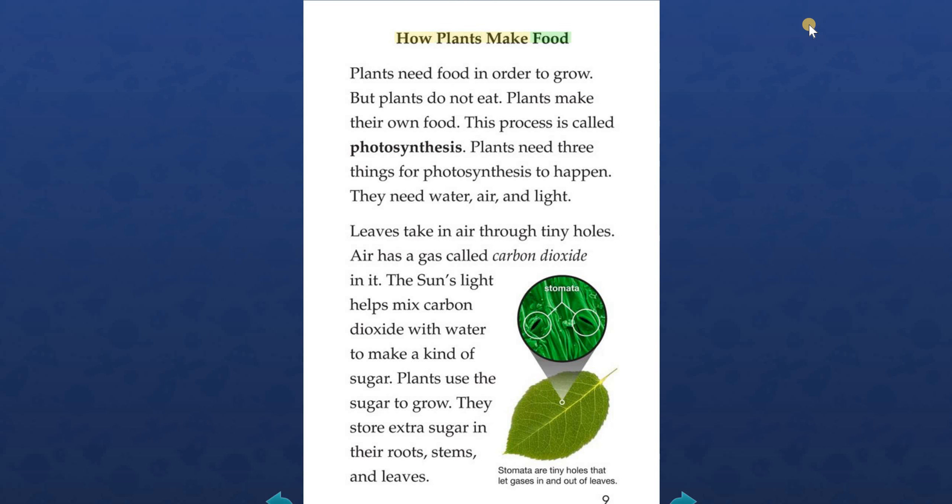How plants make food. Plants need food in order to grow, but plants do not eat. Plants make their own food. This process is called photosynthesis. Plants need three things for photosynthesis to happen: they need water, air, and light. Leaves take in air through tiny holes. Air has a gas called carbon dioxide in it. The sun's light helps mix carbon dioxide with water to make a kind of sugar. Plants use the sugar to grow. They store extra sugar in their roots, stems, and leaves.